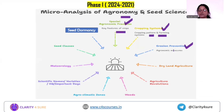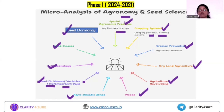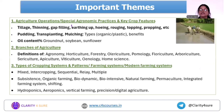The broader headings also include agronomic measures for erosion prevention, dryland agriculture, agriculture revolutions, weeds, agroclimatic zones, scientific names, headquarters, important days, varieties, meteorology, and seed classes — these are the broader headings from which frequent questions are coming. Let's discuss the themes or what you need to cover under those broader headings.